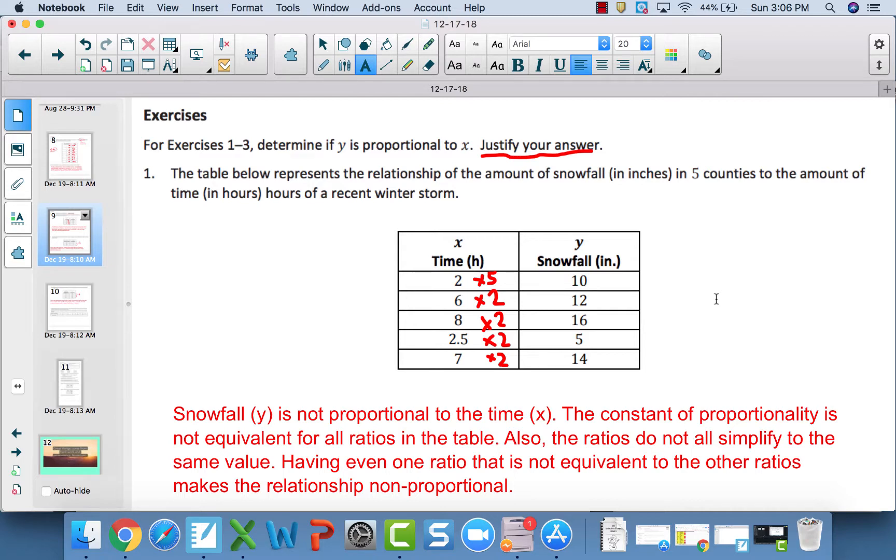For exercise 1, this table is one of the first times you're exposed to a relationship that is actually not proportional. The snowfall y is not proportional to time x because the constant of proportionality is not equivalent for all ratios in the table. The first ratio, 2 to 10, the constant of proportionality is 5. Even though all of the other ones are equivalent to each other, because the first one is different, this table is not proportional. Having even one ratio that's different than the others makes the whole table not proportional.